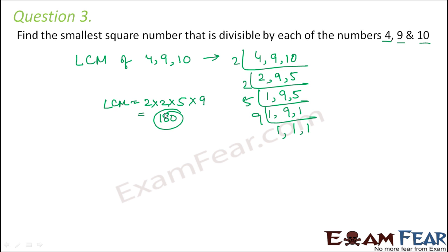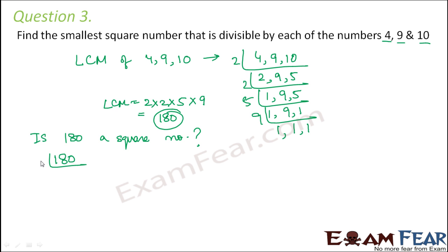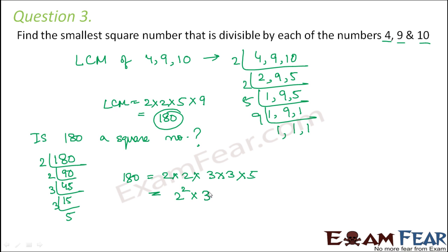But the question asks for the smallest square number divisible by all of these. We know 180 is the smallest number divisible by all three, but is it a perfect square? Let us find out by prime factorizing it: 180 equals 2 into 90, 2 into 45, 3 into 15, 3 into 5. So 180 equals 2 into 2 into 3 into 3 into 5, which is 2 square into 3 square into 5. This is not a perfect square.